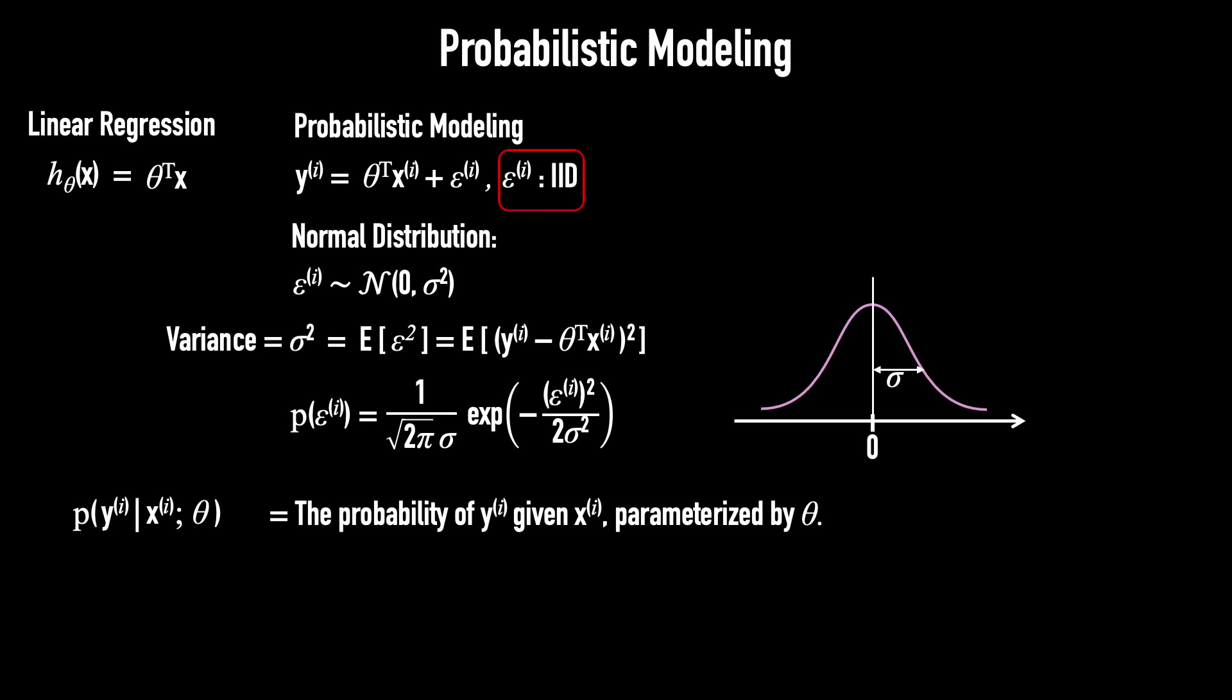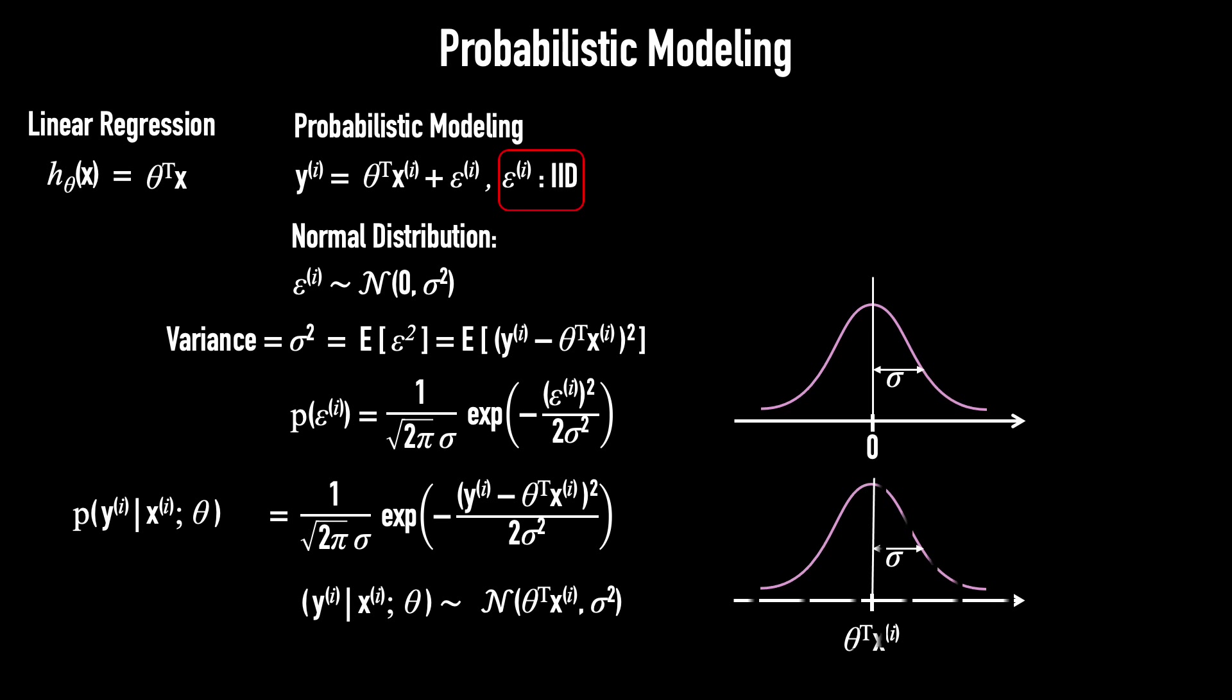Its formula, in terms of xᵢ, yᵢ, and θ, is shown here. Here is the corresponding random variable form. This is its bell-shaped curve. Notice that the mean is now θᵀxᵢ.